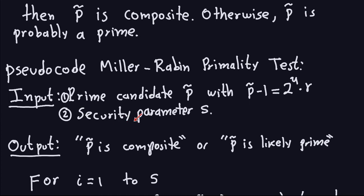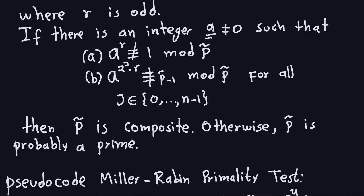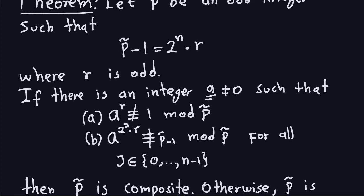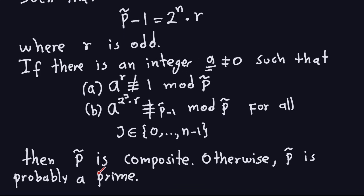There is also the security parameter S, which is a natural number. This security parameter is the number of A values we're going to try in the test. For example, if S equals 10, we'll try 10 different integers A. The more values you try, the better the probability that if the test says prime, it actually is prime — and that probability increases with the number of choices of A.